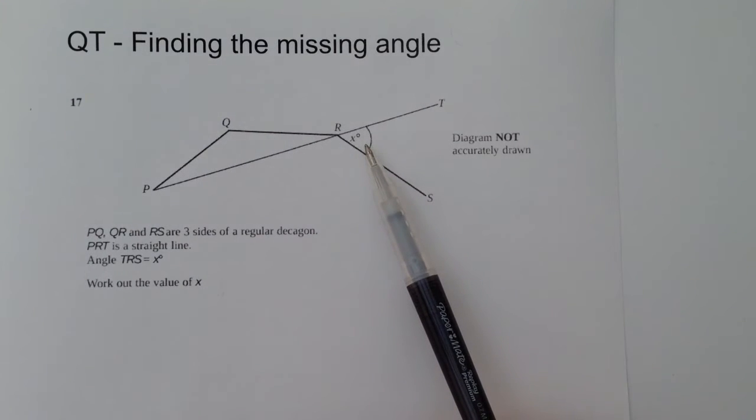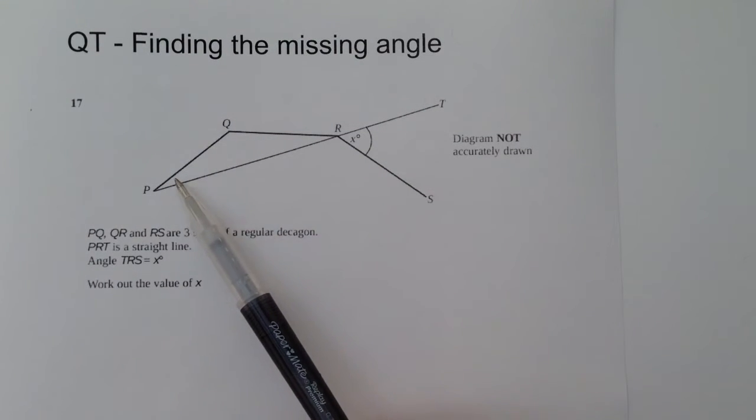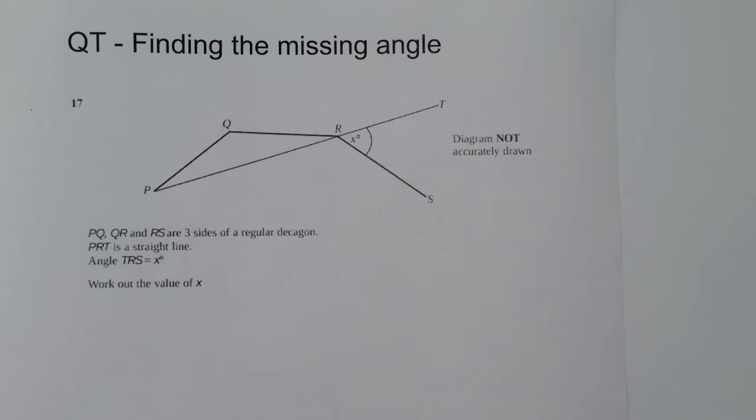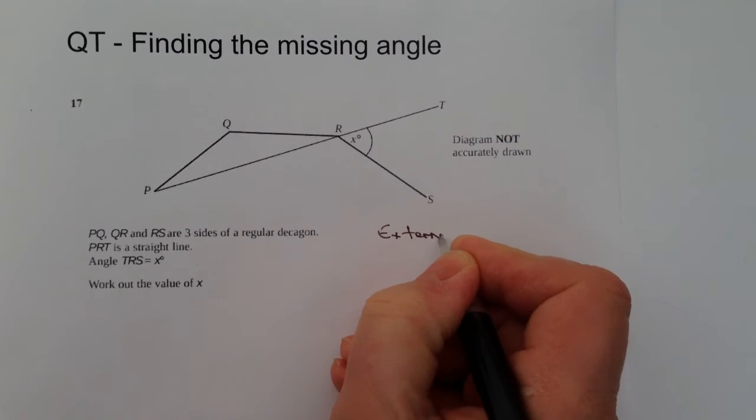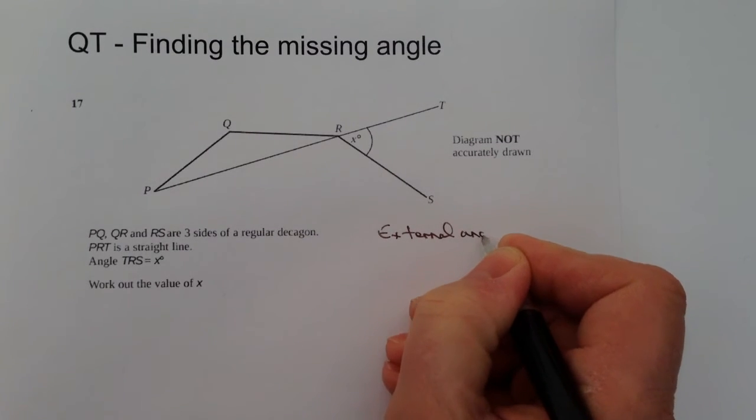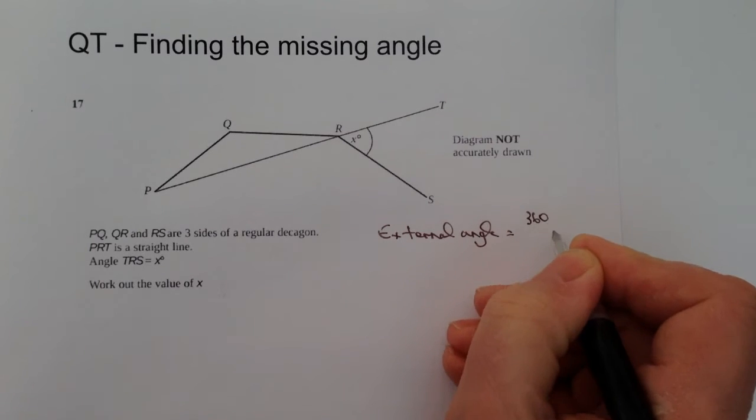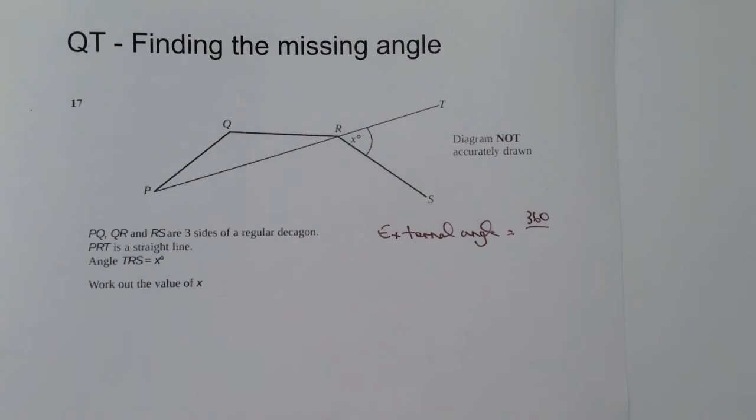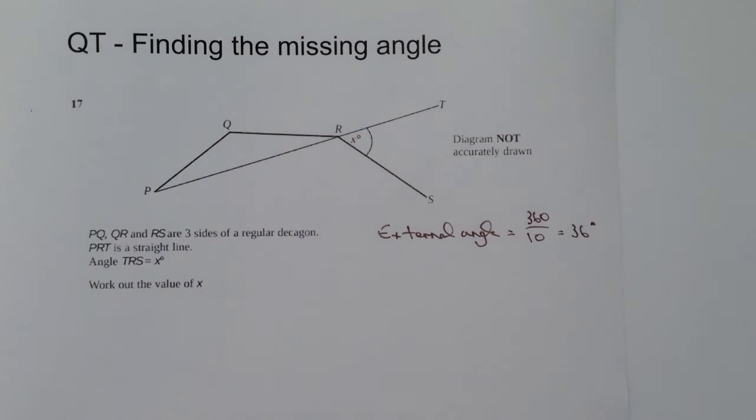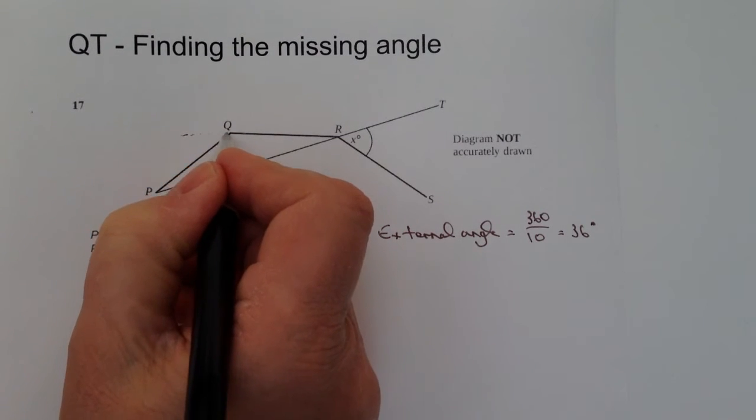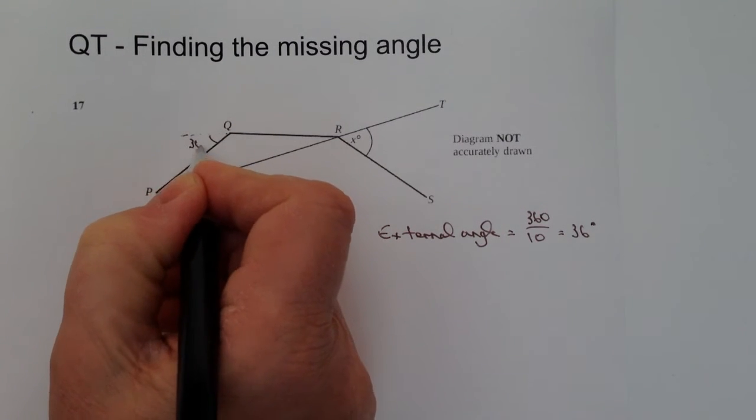We're being asked to find out the value of x and we're being told that this is a decagon. Well, if it's a decagon, it basically means it's got 10 sides. Now if it's got 10 sides, it means that the external angle of a decagon is going to be 360 divided by 10 sides, because all the external angles add up to 360. So we know that each of the external angles is going to be 36 degrees. What I mean by that is this piece along here, so this is 36 degrees.